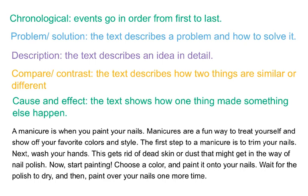In a chronological text, events go in order from first to last. In a problem-solution text, the text describes a problem and how to solve it.